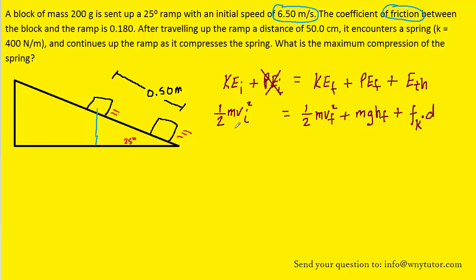Next we will replace all of the energies with their corresponding expressions. We have M for mass, VI initial velocity, VF final velocity, HF is the final height, G is the gravitational constant. F sub K will be the kinetic frictional force that's present while the block slides up the ramp, and then D will be the distance that the block is sliding up the ramp.